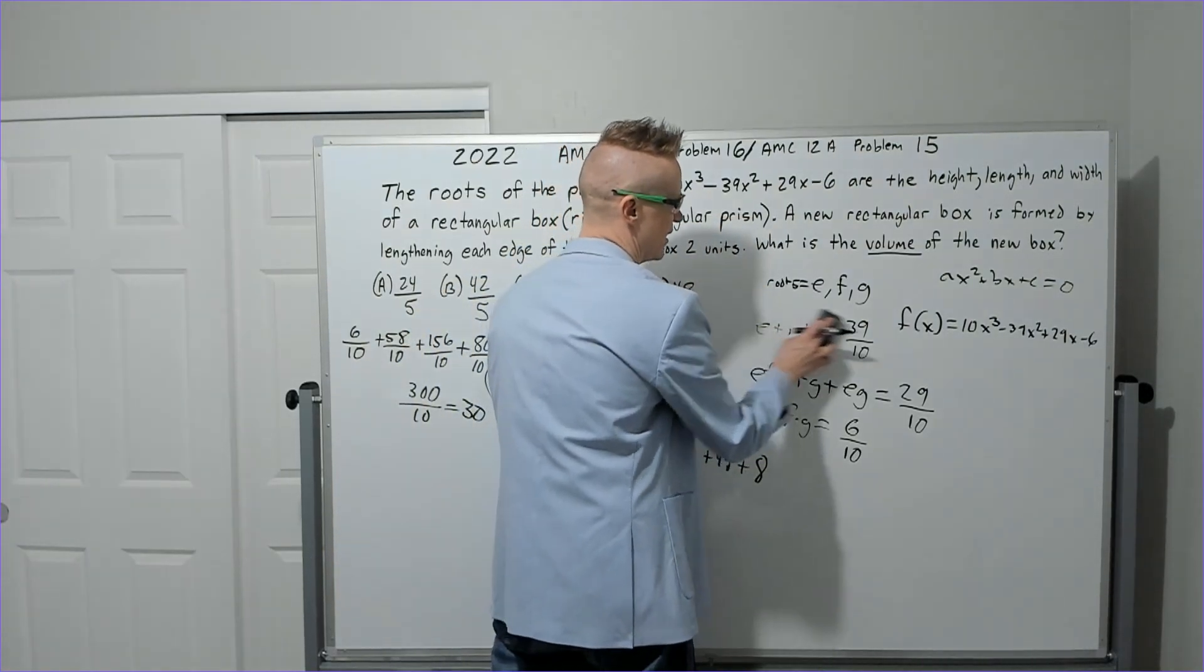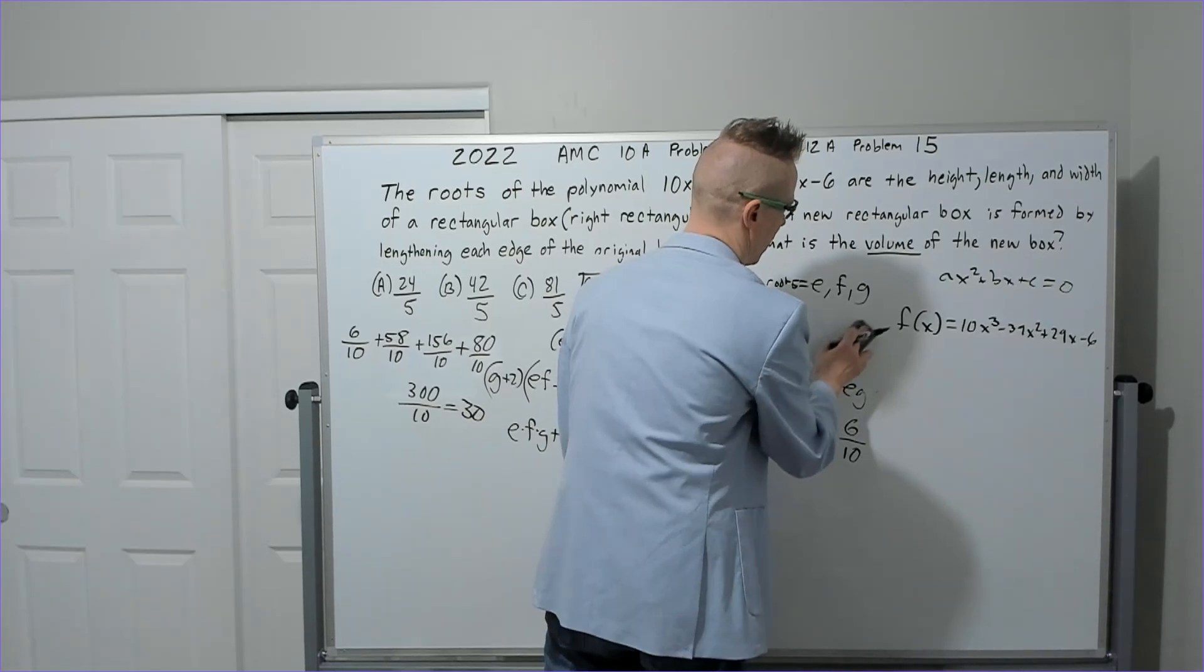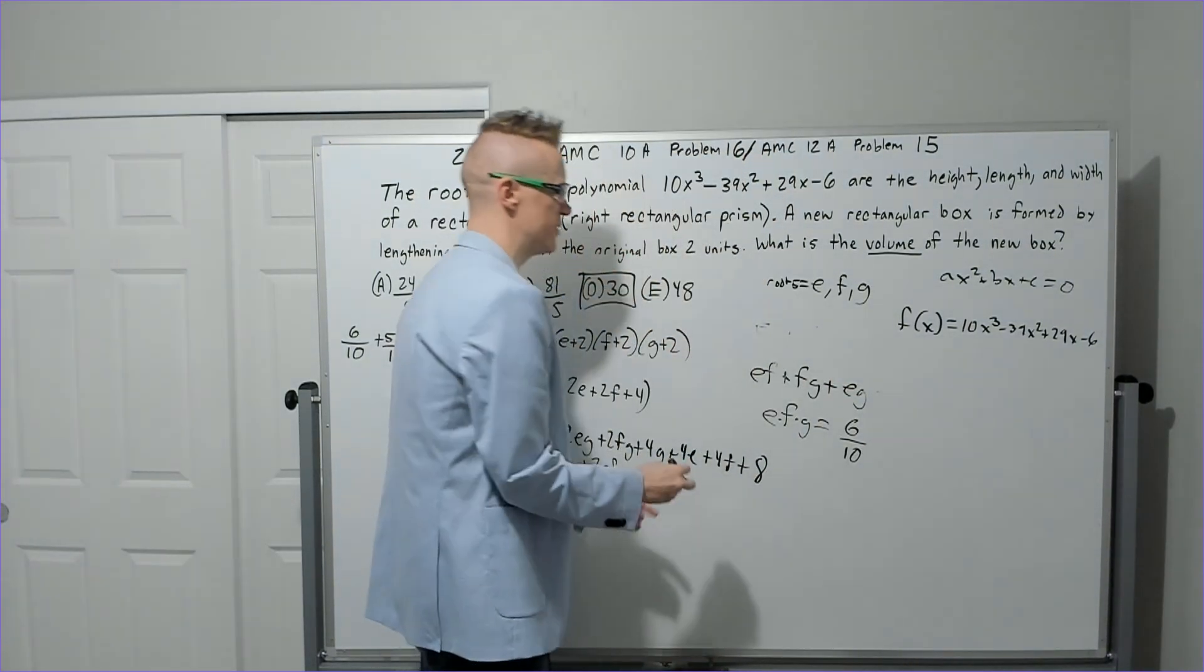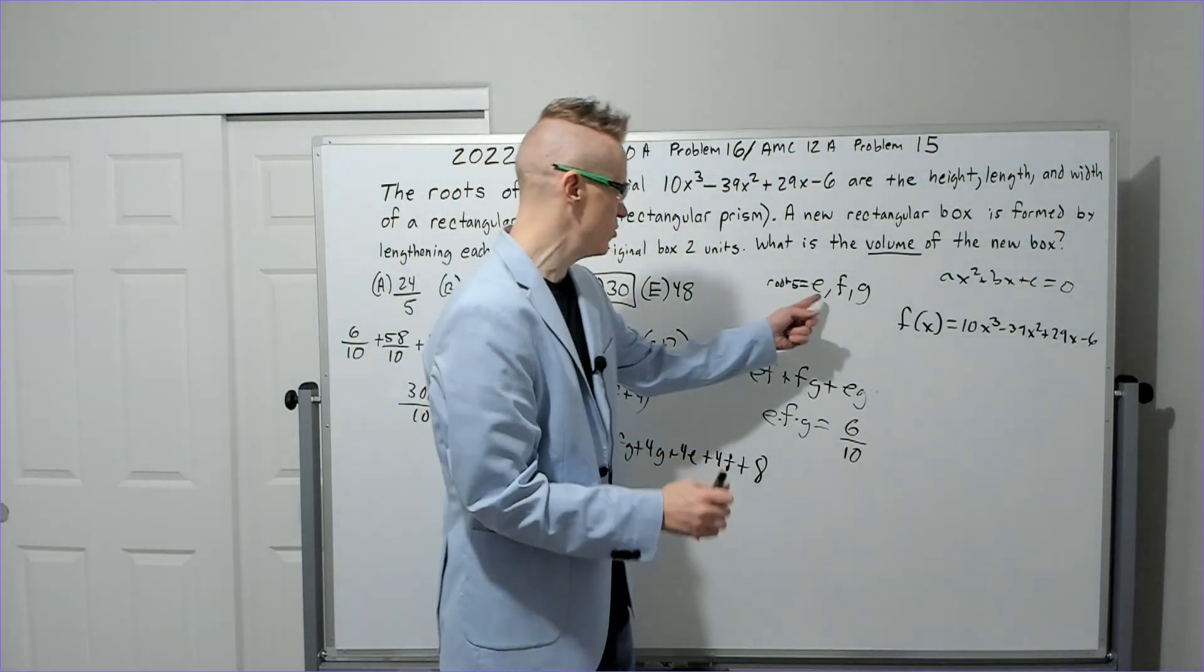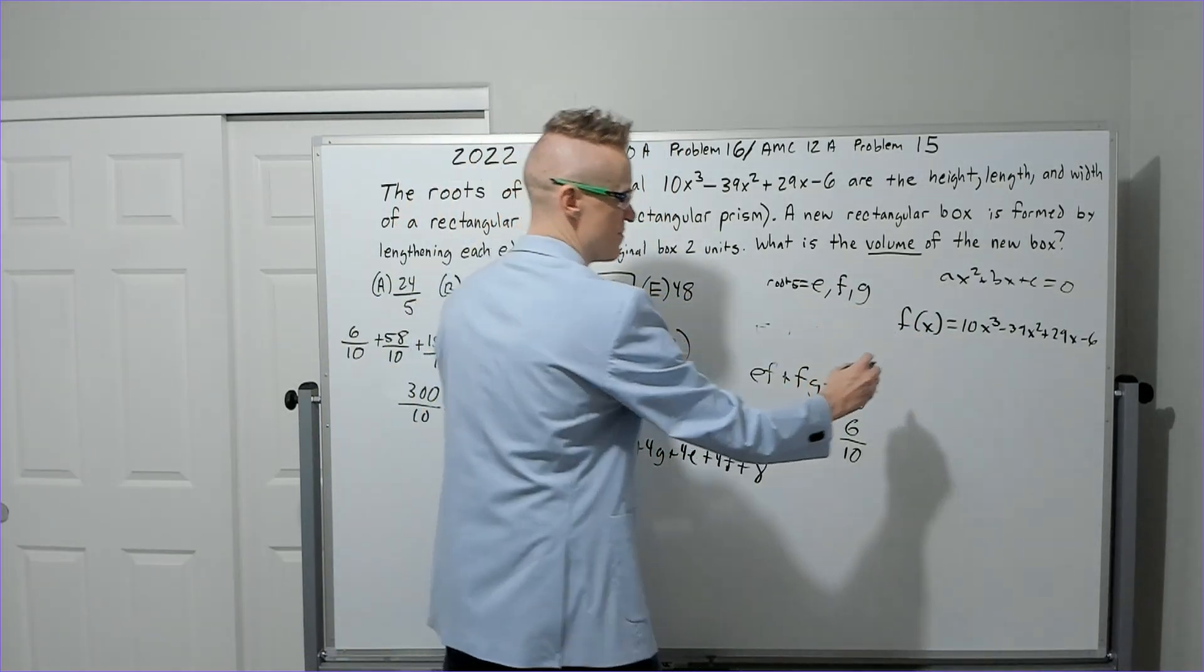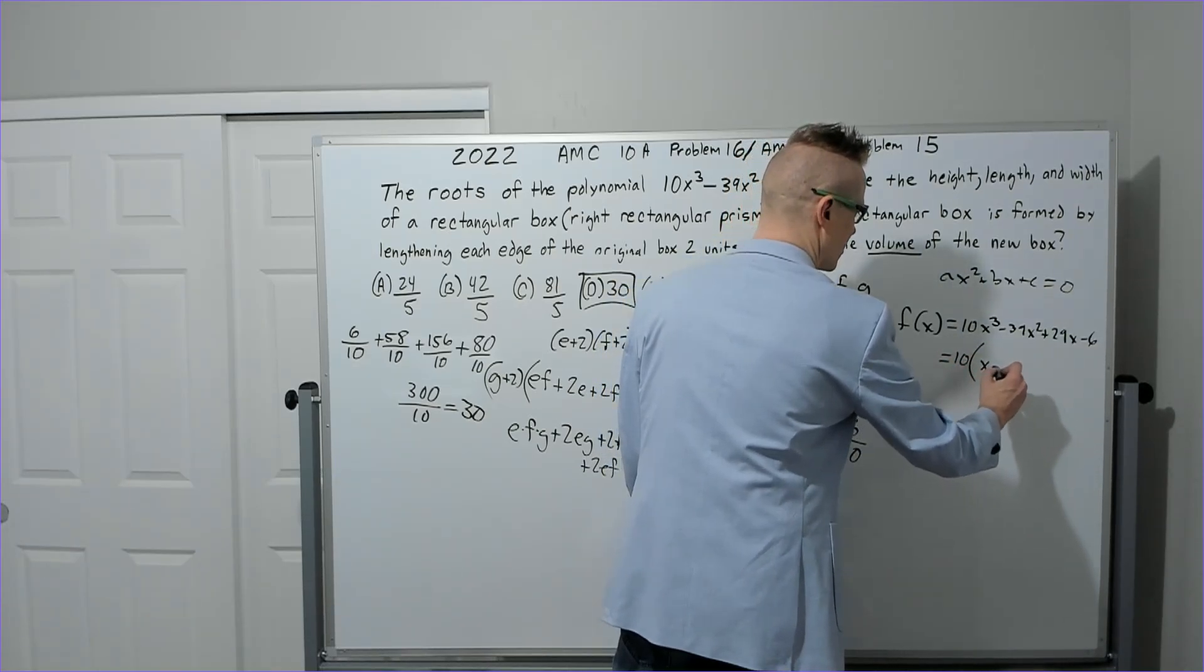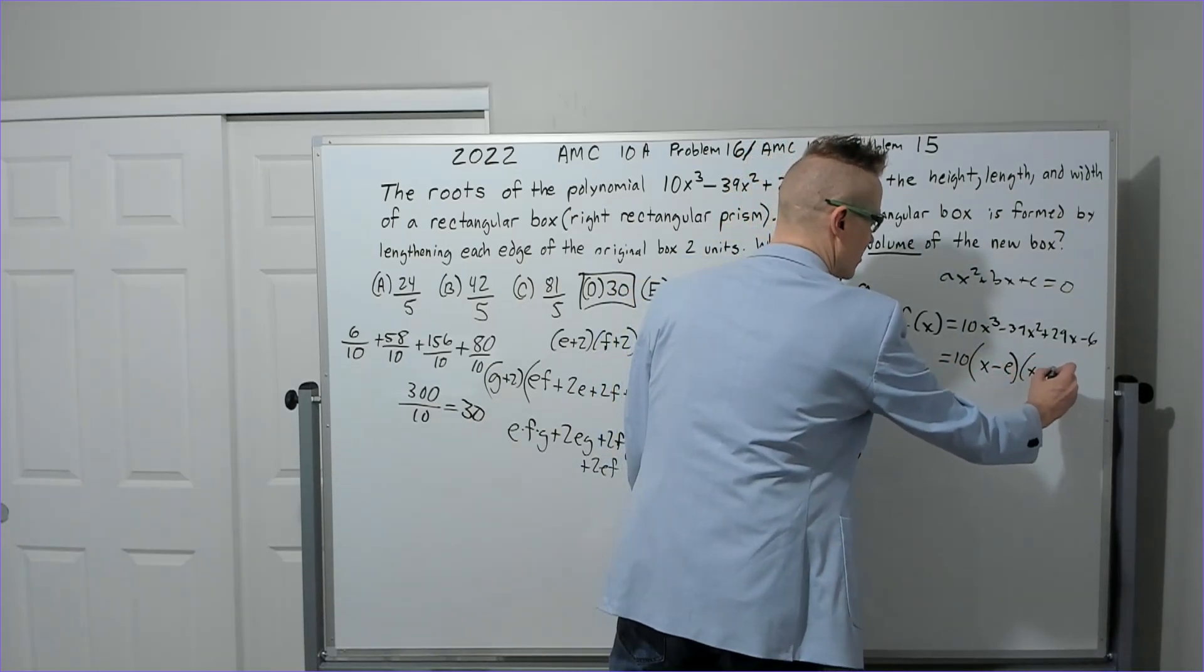And then what you would do is—let's get rid of this stuff so we have some space right there. What you would do is you would say, well, since these are the roots of this, right, we could factor out a 10 from that if we wanted to. And say that it's 10 times (x - e)(x - f)(x - g).